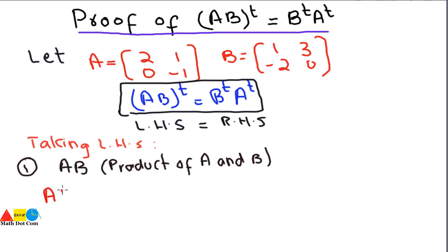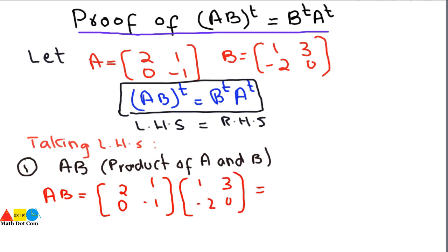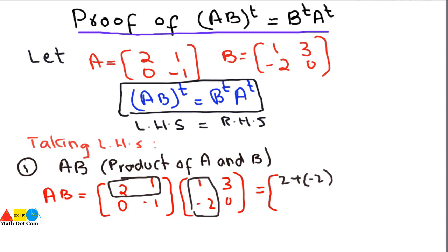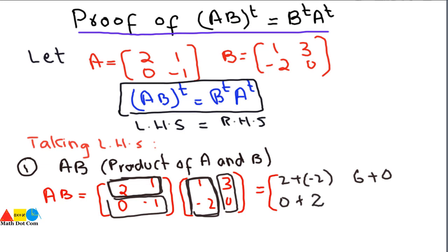AB equals A written as [2, 0; 1, -1] and B as [1, -2; 3, 0]. We apply the dot product method for multiplication. Multiplying the first row with the first column: 2×1 = 2 plus 1×(-2) = -2. Then the first row with the second column: 2×3 = 6 plus 1×0 = 0. Next, the second row with the first column: 0×1 = 0 plus (-1)×(-2) = +2, since minus times minus gives plus.